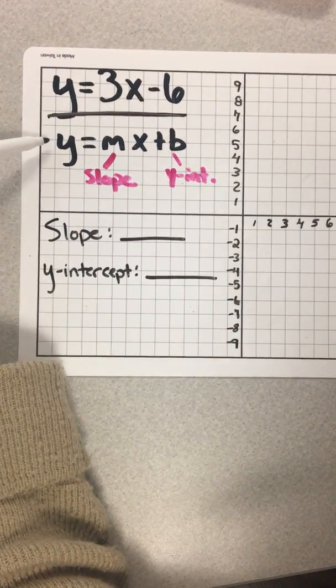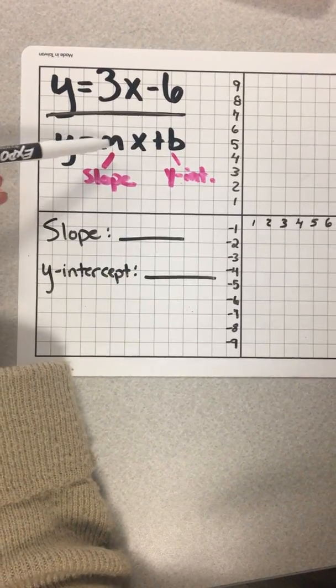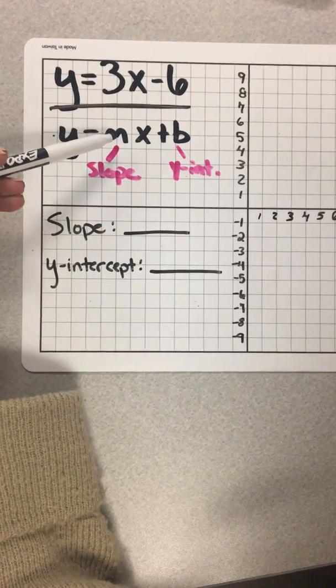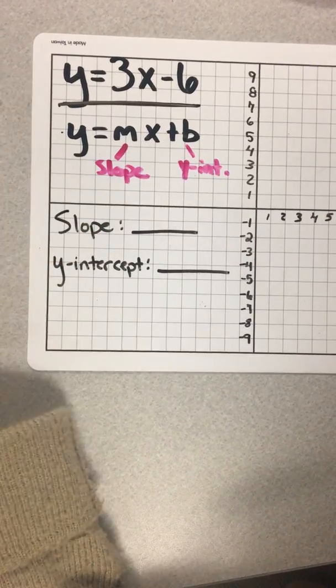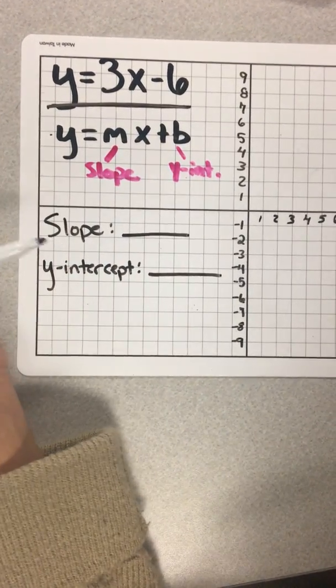So today we're going to look at how we can graph an equation that is in slope-intercept form. If you remember, slope-intercept form looks something like this: y equals mx plus b. The m represents the slope, and the b represents the y-intercept, hence the name slope-intercept form.